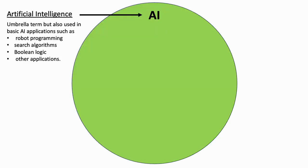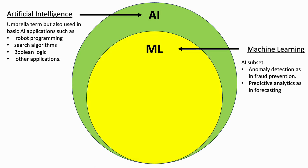Starting at the top: AI, artificial intelligence, is really an umbrella term. There are many types of AI that fit within it. It is used in basic robot programming, search algorithms, and Boolean logic applications — many areas where AI operates at a simpler level. There's a lot you can do before you have to go any deeper with AI.